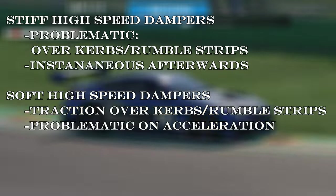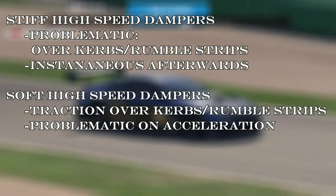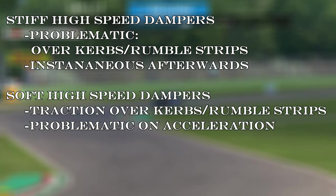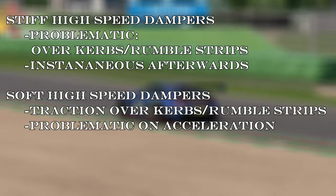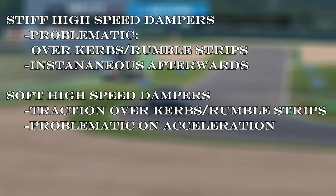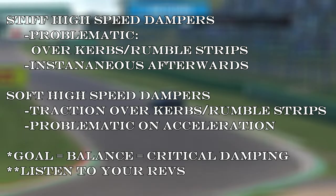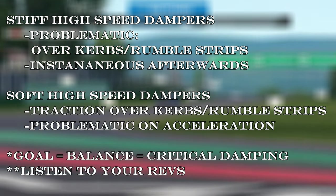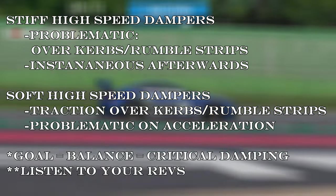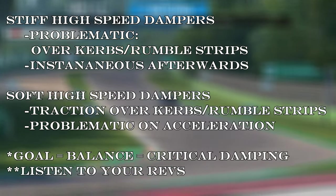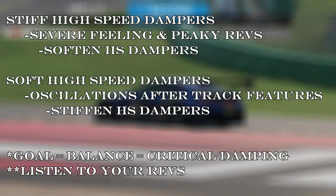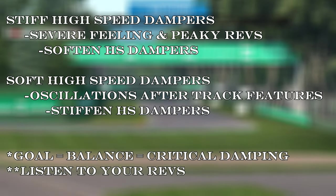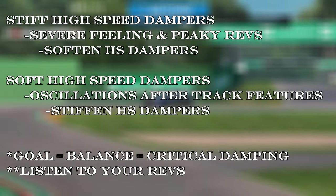So you can see that stiff high-speed dampers can be problematic when going over curbs, especially at the limit, and they don't handle rumble strips very well — but the car almost instantaneously settles for traction. Softer dampers handle curbs and rumble strips better with a bit more traction and control; however, the rear of the car will oscillate, providing inconsistent traction when accelerating. What we're looking for is a balance: soft enough to handle the curbs and rumble strips, and stiff enough to apply traction when past the track feature. The problem is we don't always have time to watch the car — test day yes, race day no. So listen to your revs: if your car feels severe and gets peaky revs over track features, try softening the high-speed dampers. If the car handles features better but the revs oscillate to where you're losing traction after the feature, stiffening the dampers is in order.